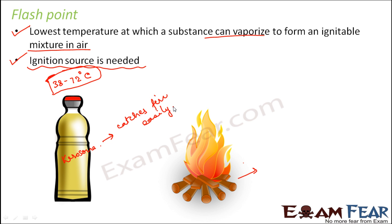The second one, because it has kerosene and kerosene has a lower flashpoint. So it will very easily get ignited when an ignition source is there — maybe you bring a matchstick near it, so that matchstick acts as the ignition source.